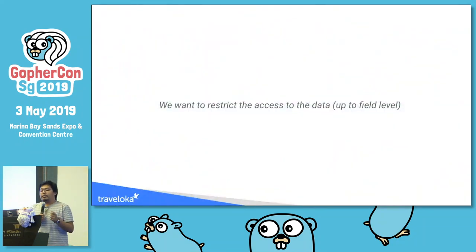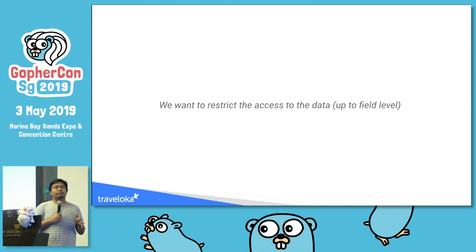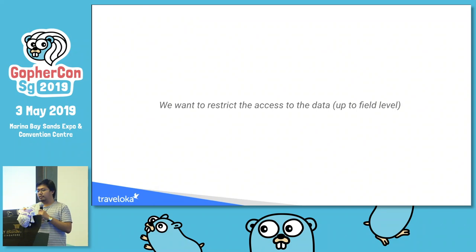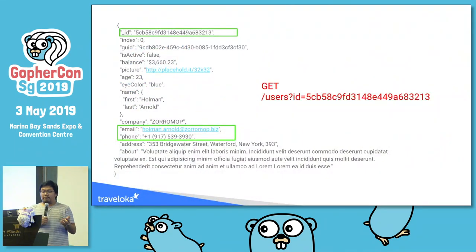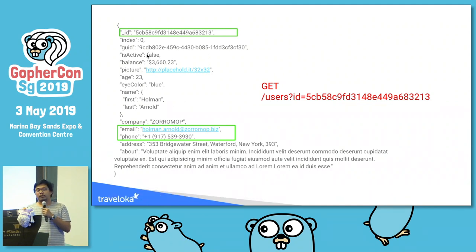The problem statement: we want to restrict data access down to the field level. Usually people protect endpoints using some kind of authorization, but we want to protect data at the field level. Imagine a single endpoint returns five fields — we want to give specific permissions to every field within that result. For example, a slash-users endpoint returning a typical JSON response: the client doesn't really want all of it — maybe they only want email, phone, and ID.